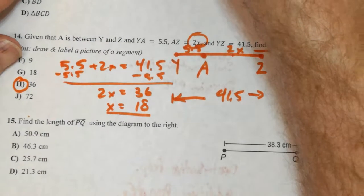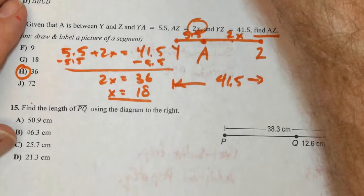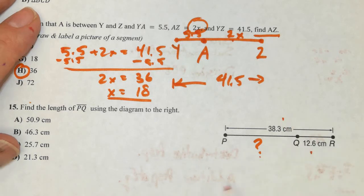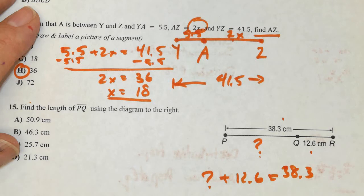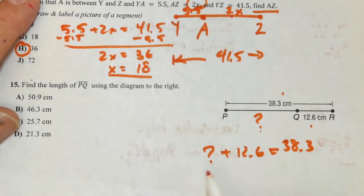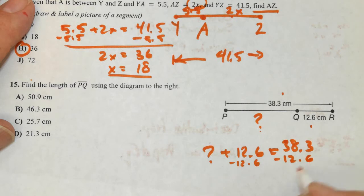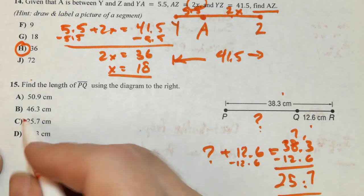Let's look at the last one. Find the length of PQ using the diagram to the right. So PQ, we want to find this as our question mark. Well, this is part plus part equals whole. So the question mark plus 12.6 equals 38.3. So we want to solve for the question mark. To do that, we have to subtract the 12.6. We're going to borrow from the 8. So that's 13, that's 7, that's 5. So 25.7 is our answer.